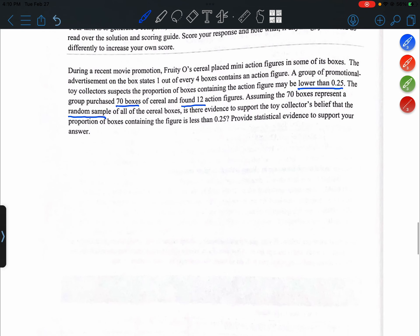Alright, so we're going to use the 4C method to do this FRQ. So first we're going to choose our procedure. Based on the question stem, there's only one sample. So this is going to be a one-sample z-test for a proportion.